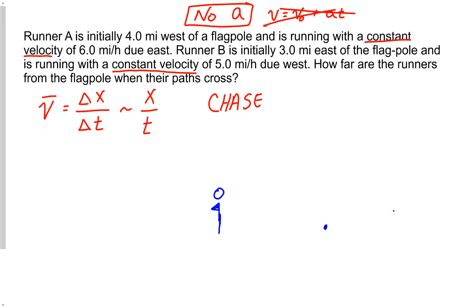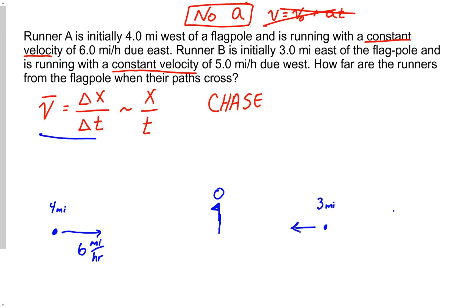I've got runner B, and what it tells me is that runner B is three miles east of the flagpole. Runner A is four miles west of the flagpole. Runner A is running six miles per hour constant velocity — constant again tells me this is the only equation that works for this problem — and runner A is running six miles per hour to the east, while the other runner is running five miles per hour to the west.